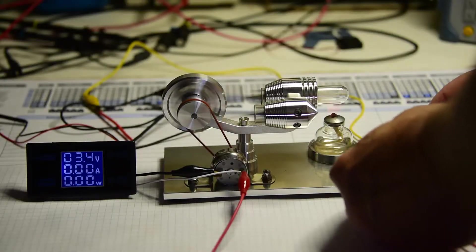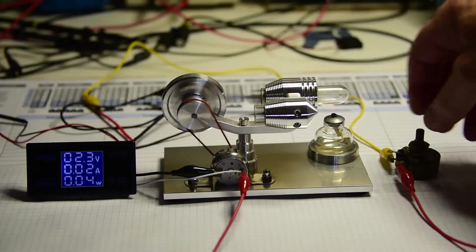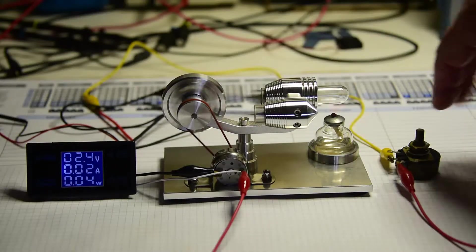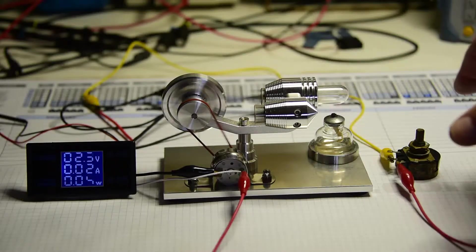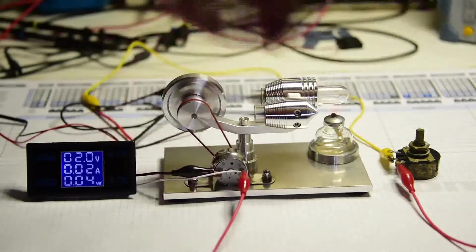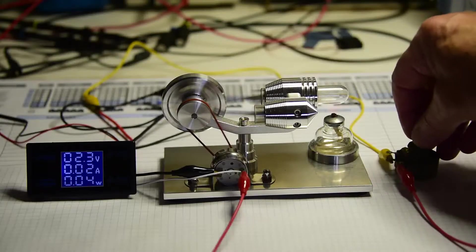So I'll connect the clip lead to the load—that's currently on maximum resistance, 100 ohms—and I'm going to wind it around to reduce the resistance, increase the current, increase the power, and see what the maximum we can get.